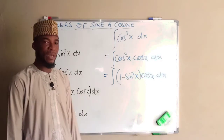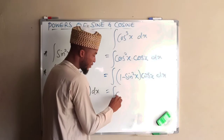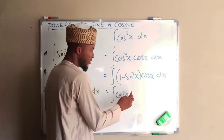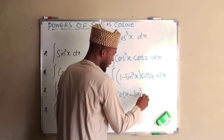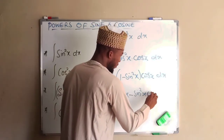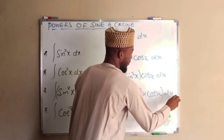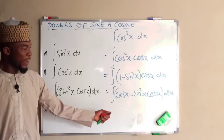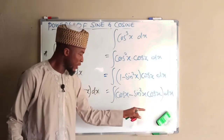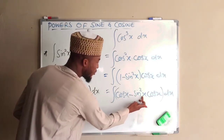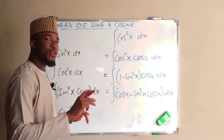So we have the integral of (1 minus sine squared X) times cos X DX. Expanding the bracket gives the integral of cos X minus sine squared X times cos X, all with respect to X. We integrate them independently: the second term, sine squared X times cos X, we have already integrated in problem three, so we have no problem with that.